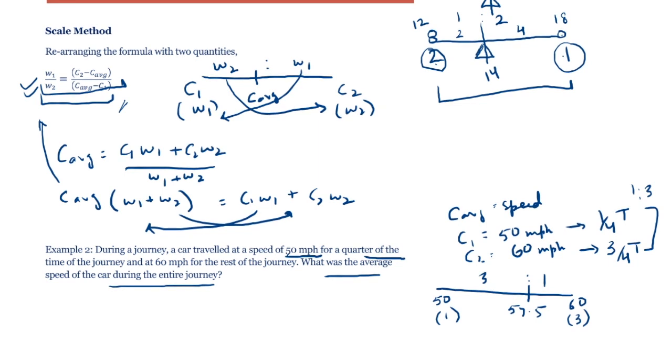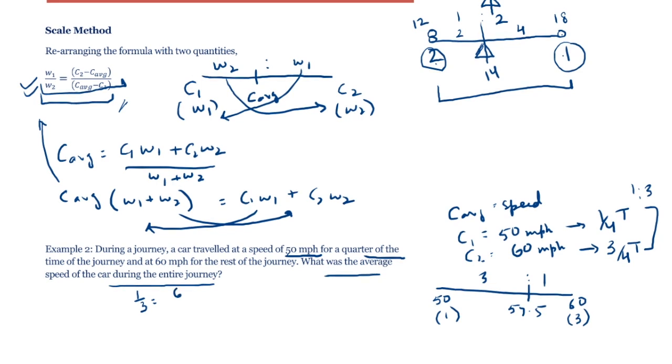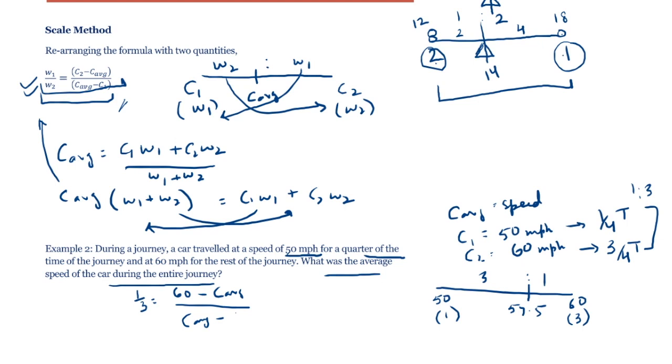I can use the formula as well. I can say w1 by w2 is 1 by 3. That equals c2 minus c average. c2 is 60 minus c average, divided by c average minus 50. So I get my c average here also as 57.5.